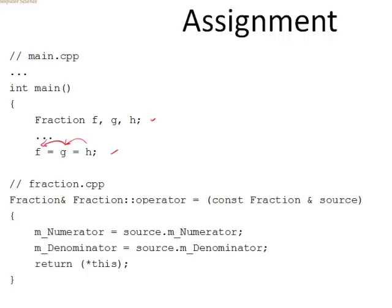And what am I going to do in this function? Well, I'm simply going to assign to the numerator and denominator of the calling object — and remember, with a member function there is always a calling object. So I'm going to assign to the numerator and denominator of the calling object the numerator and denominator of the passed object, which I called source. And then I'm going to return star this.